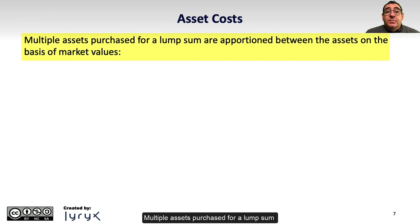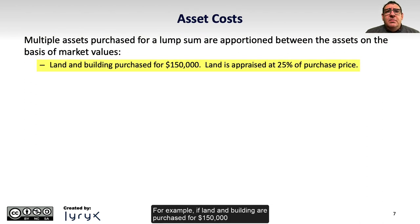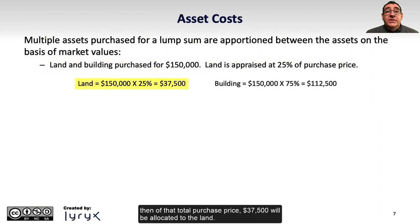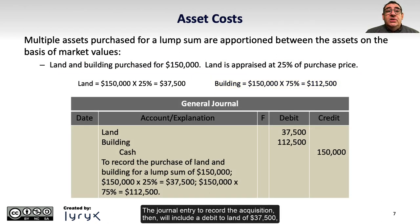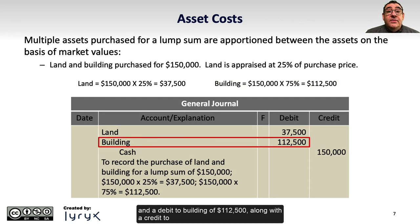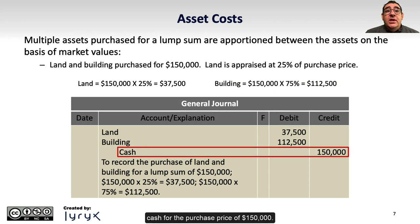Multiple assets purchased for a lump sum are proportioned between the assets on the basis of their market values. For example, if land and building are purchased for $150,000, and the land is appraised at 25% of the purchase price, then $37,500 will be allocated to the land. The remaining 75% will be allocated to the building. The journal entry to record the acquisition will include a debit to land of $37,500, a debit to building of $112,500, and a credit to cash for $150,000.